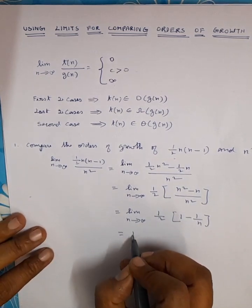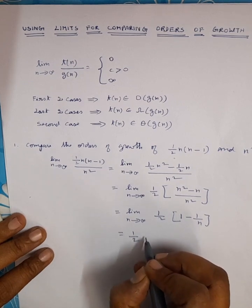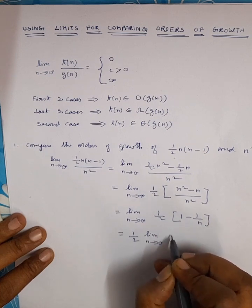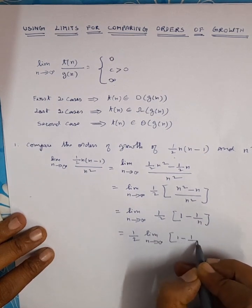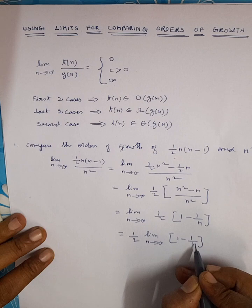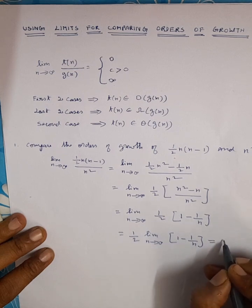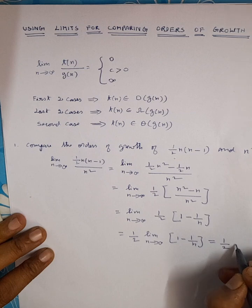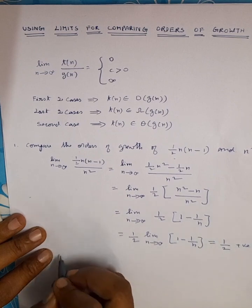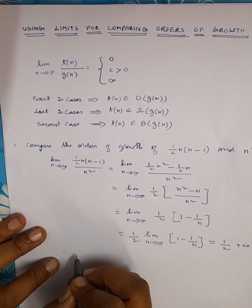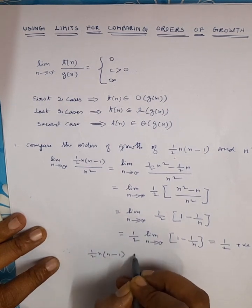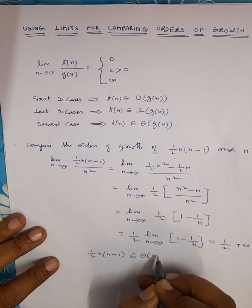Taking the constant term outside of the limit, we get ½ into the limit as n tends to infinity. Applying the limit inside the parenthesis, we get the value 1/2, which is a positive constant. Therefore the function has the same order of growth, and ½n(n−1) is in Theta of n².